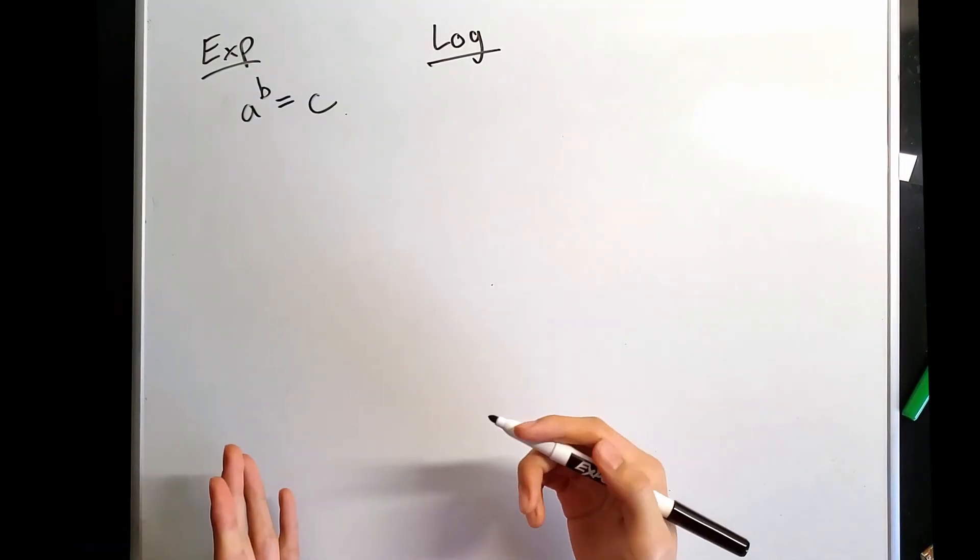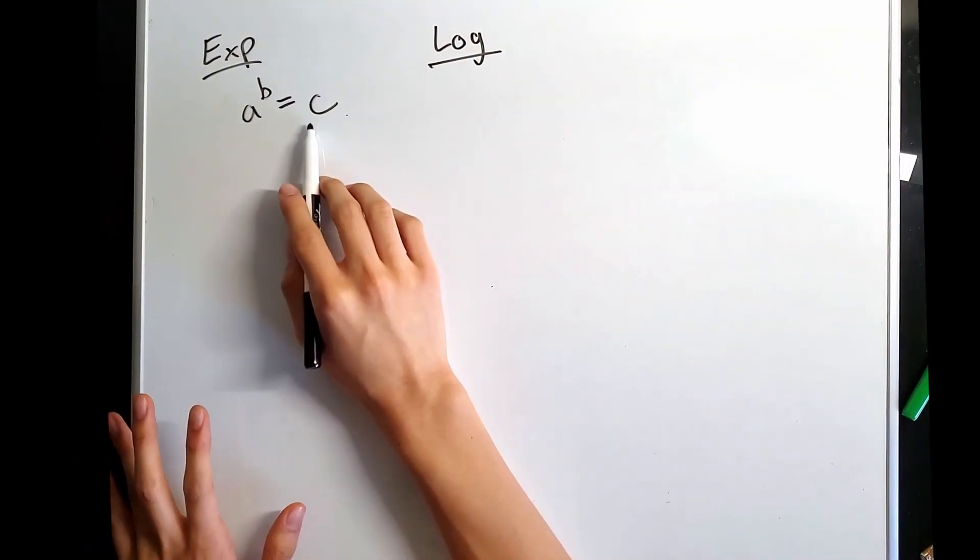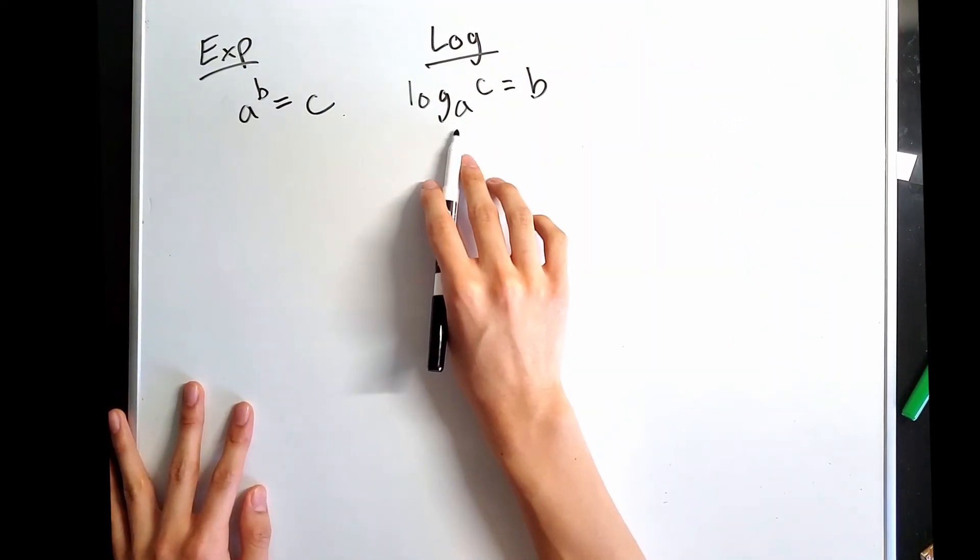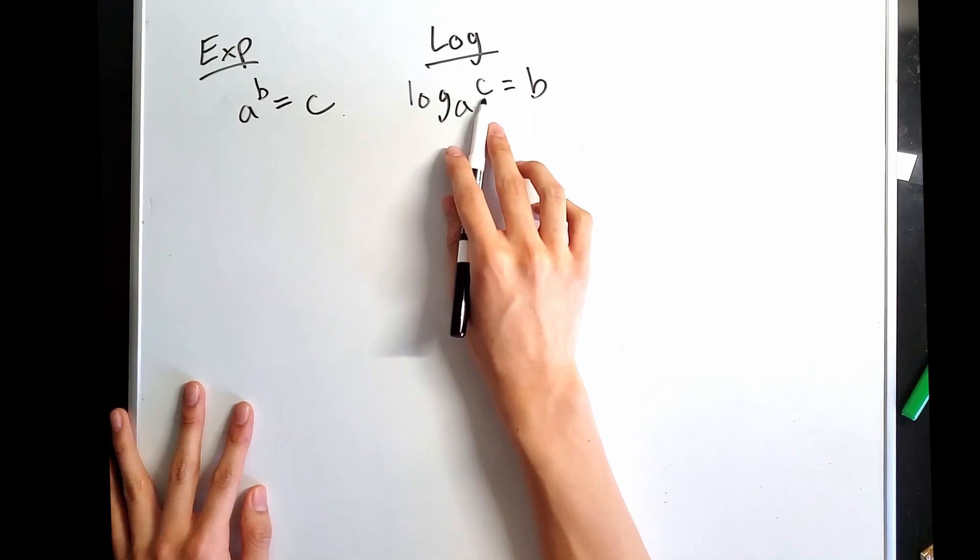Logarithms are just an inverse form of exponential. So if a to the b is equal to c, then the log in base a of c is equal to b. Logarithms give you the exponent that the base has to go to in order to form c.